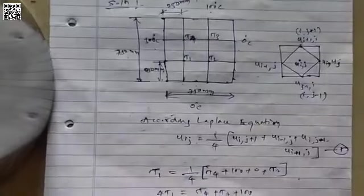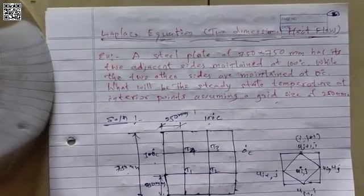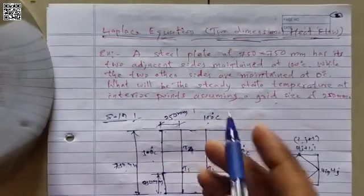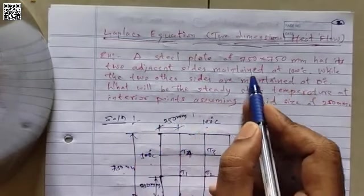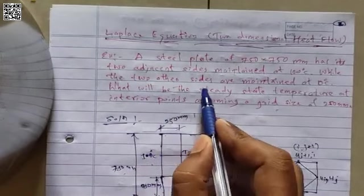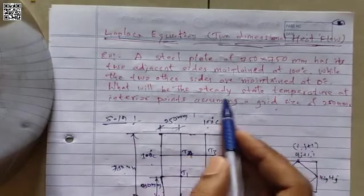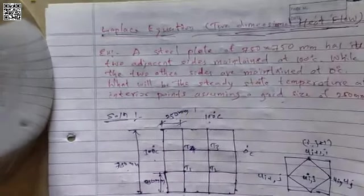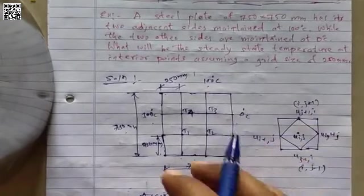We will take an example and solve it in detail. First I will read the statement of the problem. Laplace equation — two dimensional heat flow problem: a steel plate of 750 by 750 millimeters has its two adjacent sides maintained at 100 degrees Celsius, while the two other sides are maintained at 0 degrees Celsius. What will be the steady state temperature at interior points, assuming a grid size of 250 millimeters? We need to calculate the temperature at the interior points of the plate.